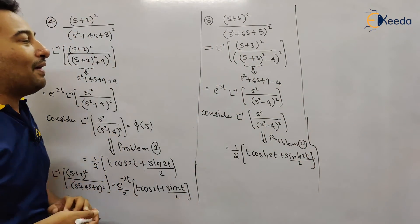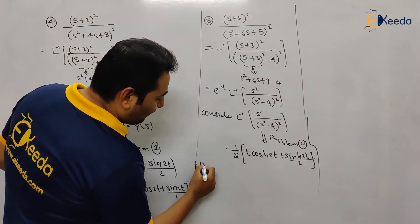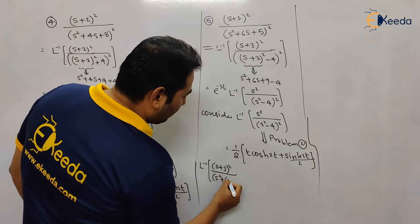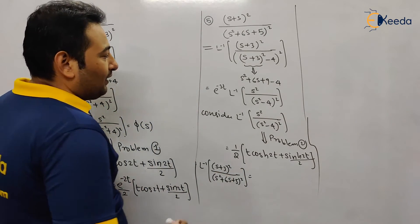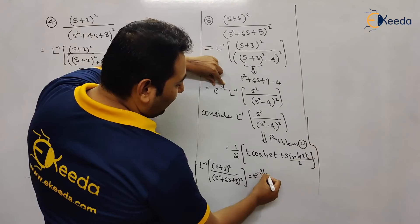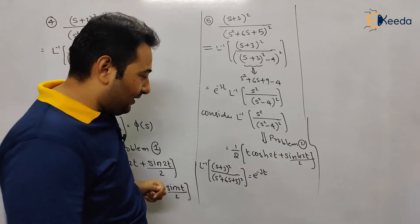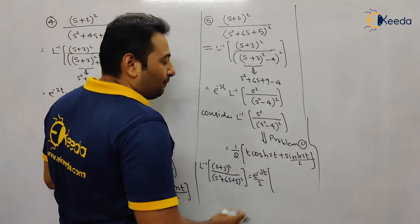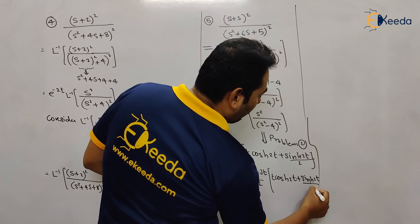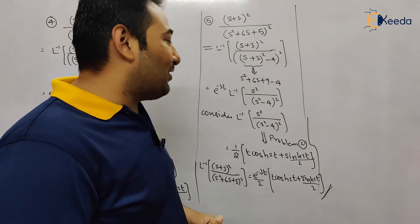We're not done completely, because the final solution is the Laplace inverse of the original term. The final Laplace inverse of (s + 3)² upon (s² + 6s + 5) the whole square equals e^(−3t) into the Laplace inverse of that term, which gives e^(−3t) multiplied by [t·cosh(2t) + sinh(2t)/2]. This is your required solution for problem number five. Hope you understood, thank you.